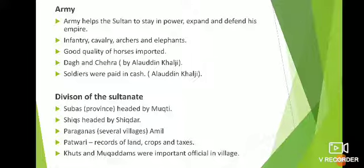Another practice started by Alauddin Khalji was the Chehra — a full description of each soldier including their appearance and height, maintaining a complete record. During Alauddin Khalji's reign, soldiers were paid in cash. Since he had fixed and lowered the prices of all commodities through his market reform policy, he could pay lower salaries while still ensuring soldiers could afford their daily necessities.